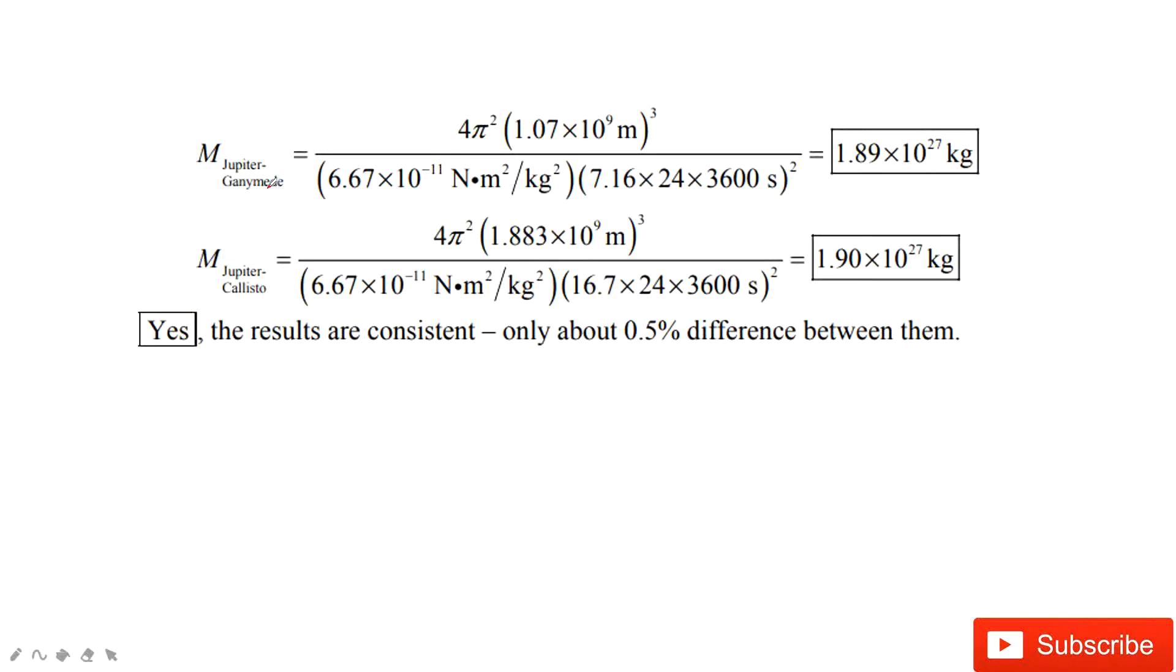Similarly, for another two moons, still we get the same value for the mass of Jupiter. So we can say, yes, this is a constant.